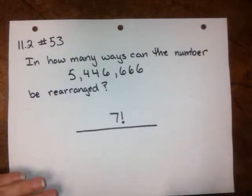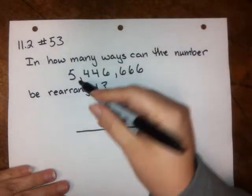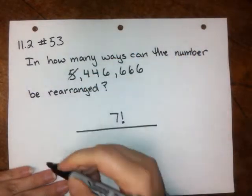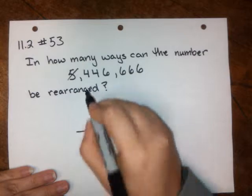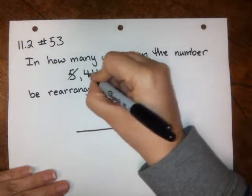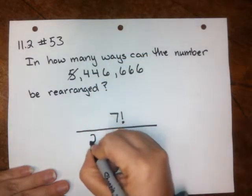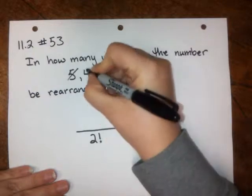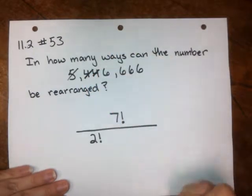But now we need to account for any numbers that show up more than once. So we go through and we look. Five, it only shows up once. We don't have to worry about that. Four, it shows up twice, so we need to put a two factorial in the denominator to account for the fact that we have a double number.